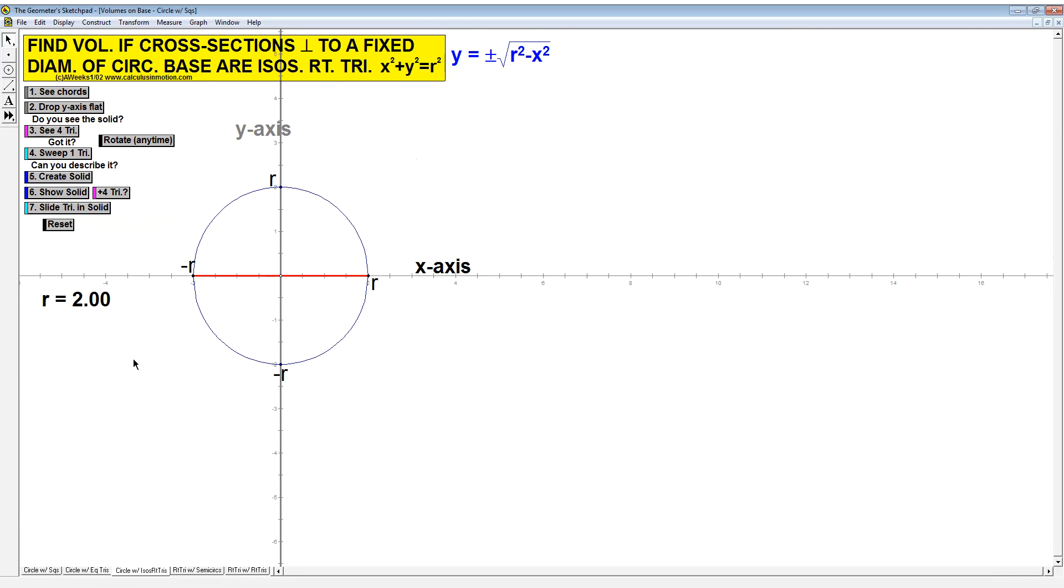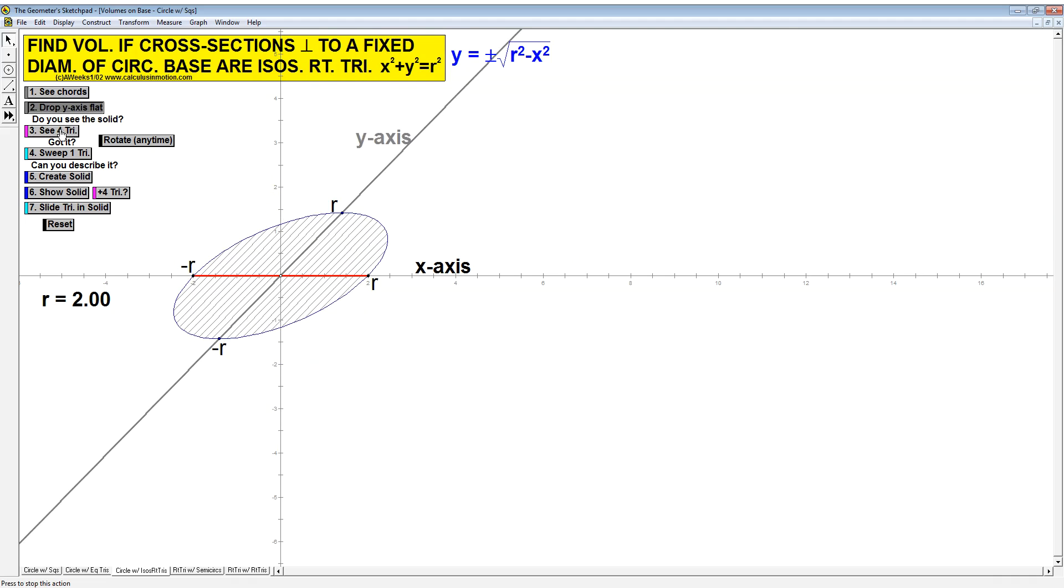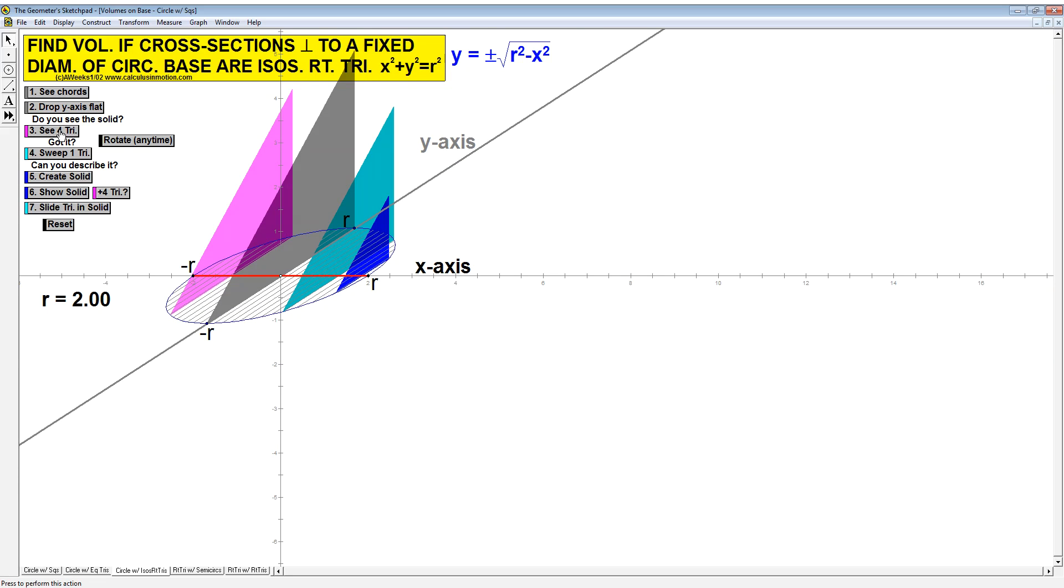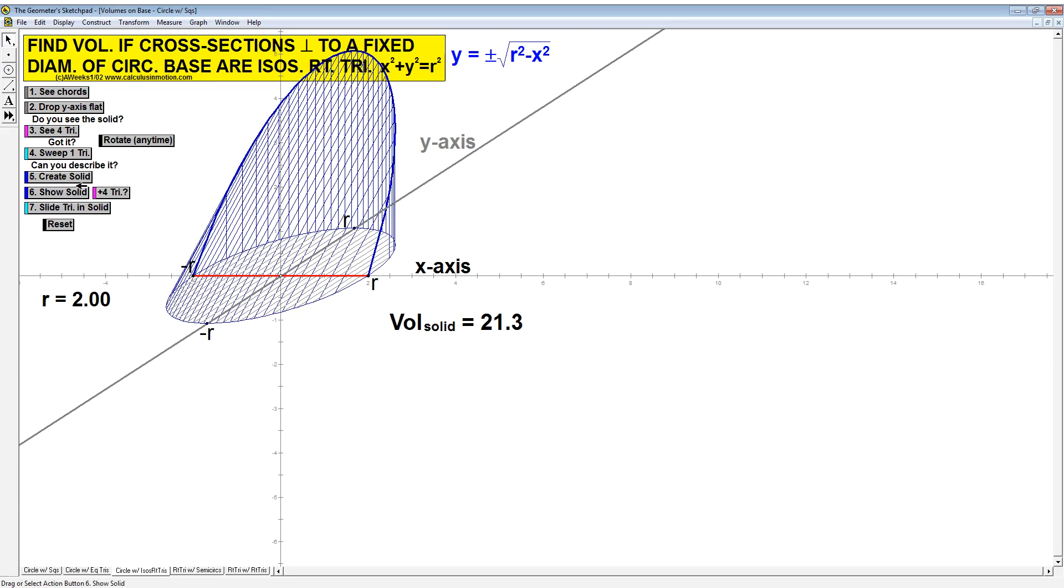We could also have isosceles right triangles. There's our chords, so y-axis. Here's four of the triangles. We know that base times height divided by two, that's our area. But the height is the same length as the base. When we show the solid, there it is.